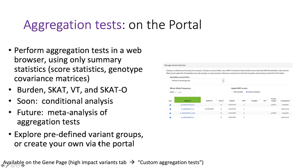On the portal, there's already existing infrastructure for actually computing or running burden tests and doing custom testing. They're able to take this library and plug it in to allow people to try running different tests. There's a UI for selecting what variants to put into your aggregation tests — say, protein truncating variants, or variants with a certain minor allele frequency. Then it will show you what variants it's going to use, run the test, and show you the p-values and results.